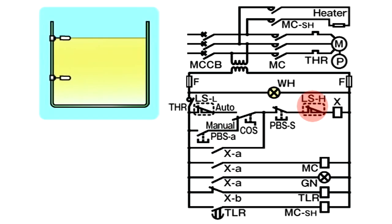The MC-coil is demagnetised as X-A turns off. As a result, MC-contactor turns off to interrupt the supply of power to the motor, bringing pump operation to a halt. As X-A turns off, the green operation lamp goes out. With X-B turned on, the timer TLR coil is excited. The TLR relay turns on after a set period of time elapses, and the MC-SH coil is excited. Then MC-SH contactor turns on, allowing current to flow to the space heater. This prevents the motor from accumulating condensation due to cooling.